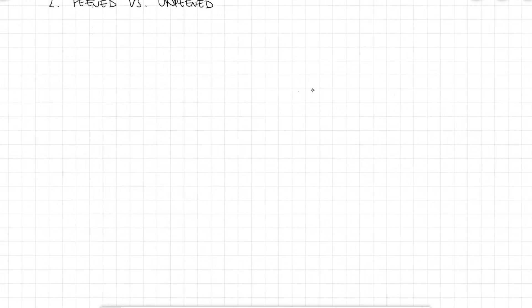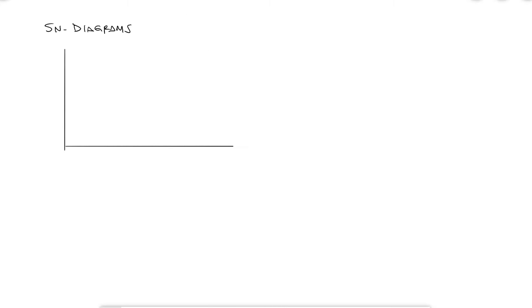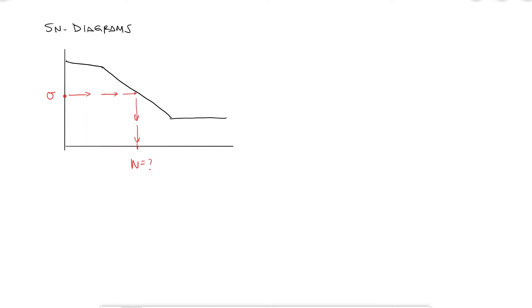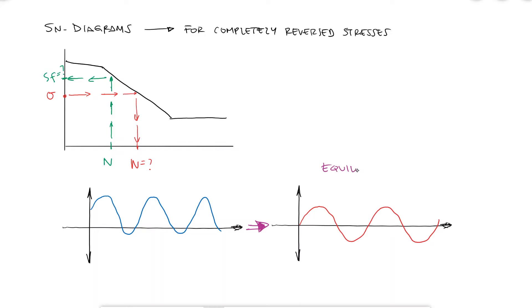If you remember, all the SN diagram calculations for finding the number of cycles for a given stress or fatigue strength for a given number of cycles relied on having a completely reversed stress as the result of cyclic loading. The process we'll cover today is applicable to finding the equivalent completely reversed stress for a non-completely reversed fluctuating stress, which I mentioned during the last one of the fatigue videos.